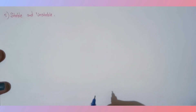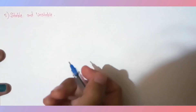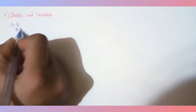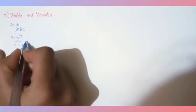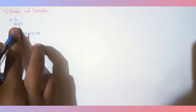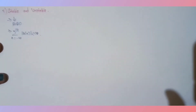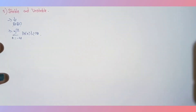The stable or unstable classification is very important and may be asked in exams. A system is said to be stable if it satisfies the BIBO condition — bounded input and bounded output — and the magnitude is less than infinity. For every bounded input there must be a bounded output; otherwise the system is unstable.